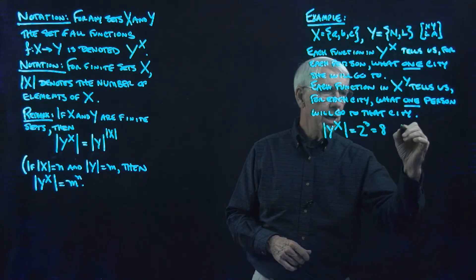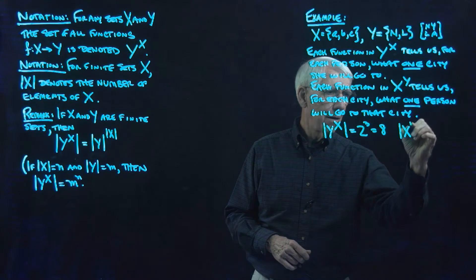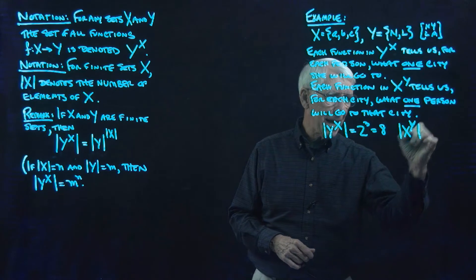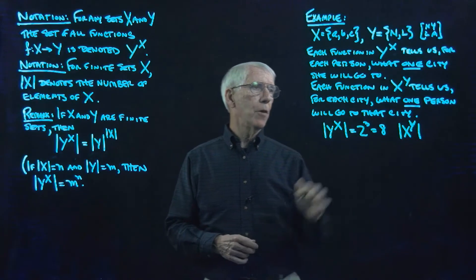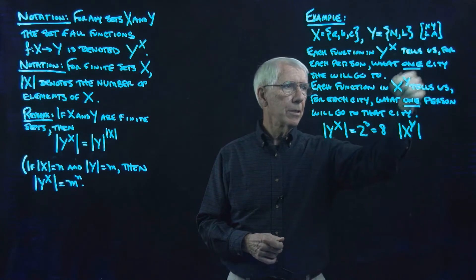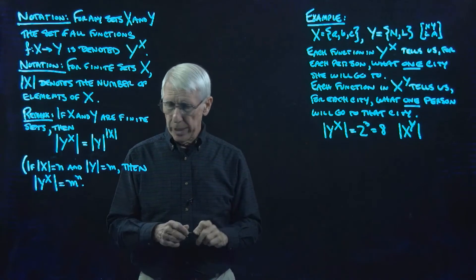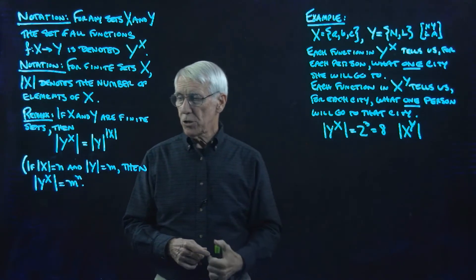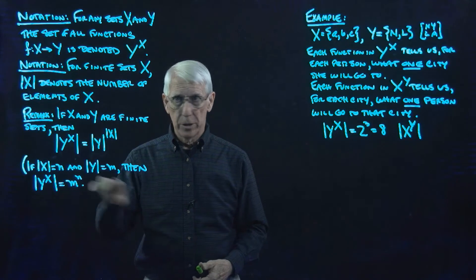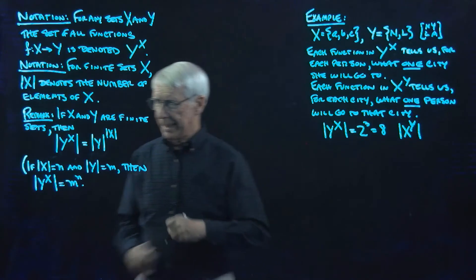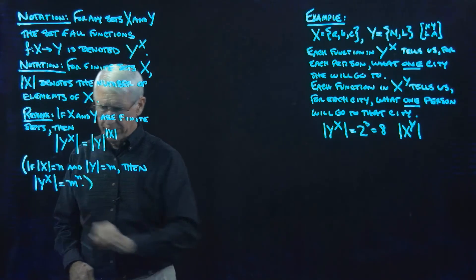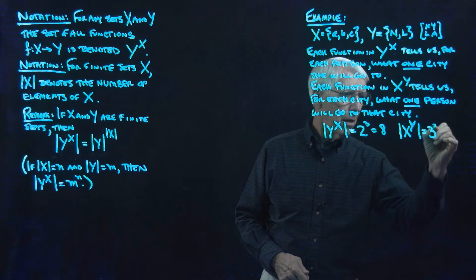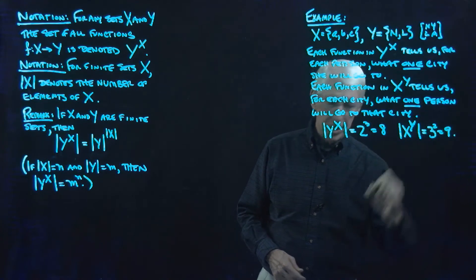And we know that — emphasizing these are sets, these are capital letters — the set of all functions from y to x is going to be the reverse: 3 squared. We can just refer to what we did over here. So this is 3 squared, which is 9.